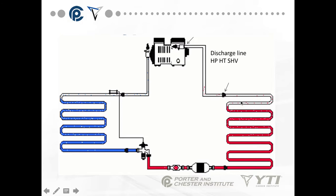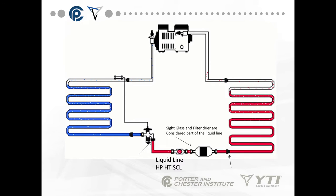Remember, the condenser first desuperheats, then condenses, then sub-cools. Once the refrigerant is now a sub-cooled liquid, it moves into the liquid line — that's why it's called a liquid line. The liquid line includes the sight glass and the filter dryer. It starts at the outlet of the condenser and goes to the metering device.